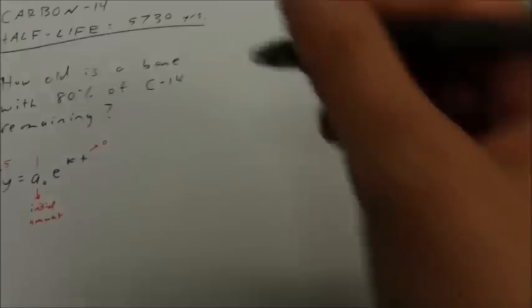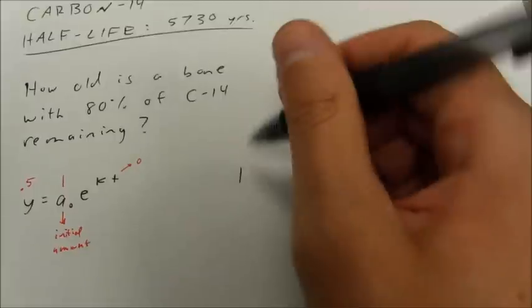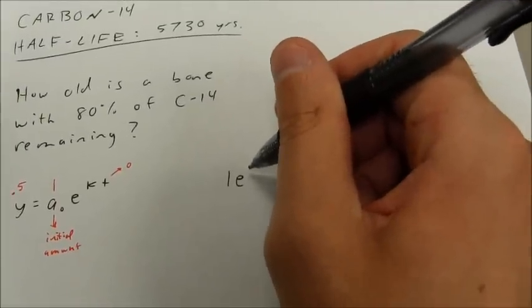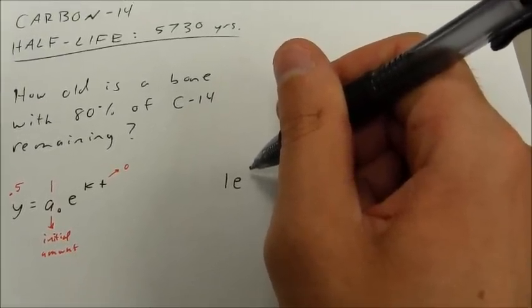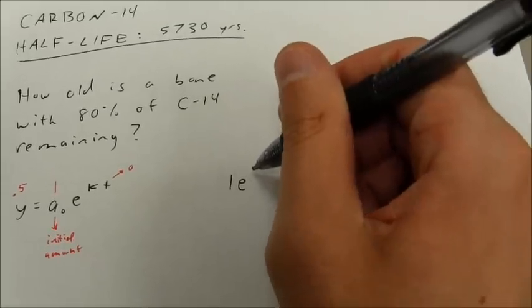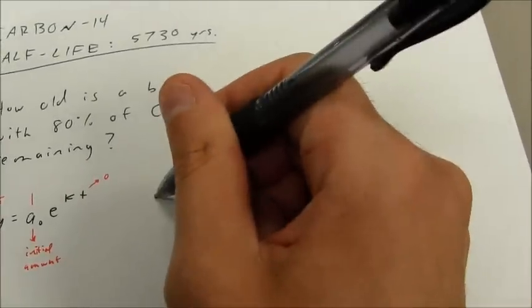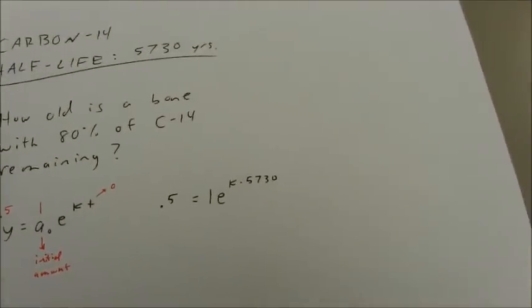I can use that to solve for that k value. So I want to take 1 unit of carbon-14, and I'm going to substitute for t, 5,730 years. And after that amount of time, I should have 0.5 units remaining.